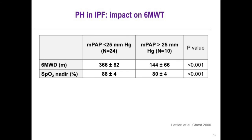PH also has implications for functional ability. Patients with pulmonary hypertension walk less and desaturate more. So if you have patients who do a six-minute walk, don't walk very far, and have excessive desaturation, that might be an indicator they have underlying PH. It's a chicken-and-egg situation — is it the hypoxia causing the PH, or the PH causing the hypoxia? One likely feeds into the other in a negative feedback loop.